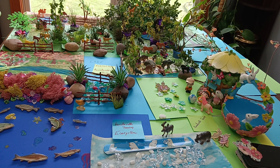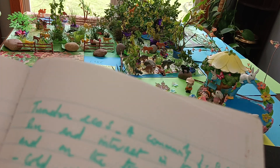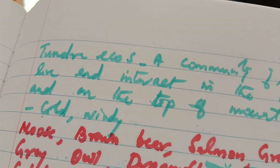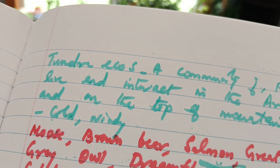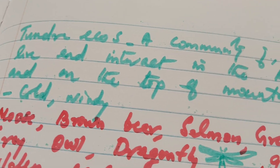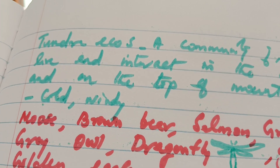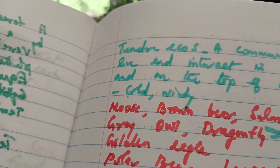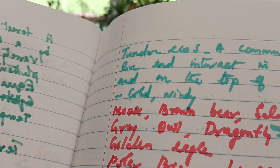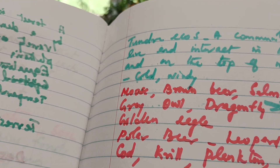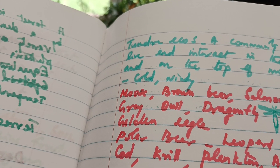The marine ecosystem is a rich ecosystem — more salty compared to the freshwater ecosystem. Now comes the tundra ecosystem. The tundra ecosystem is a community of plants and animals that live and interact in the Arctic and on top of mountains, where cold and windy conditions prevail. It lies between 55 degrees and 66.5 degrees latitude. Animals found there include moose, brown bear, salmon, and great griot.